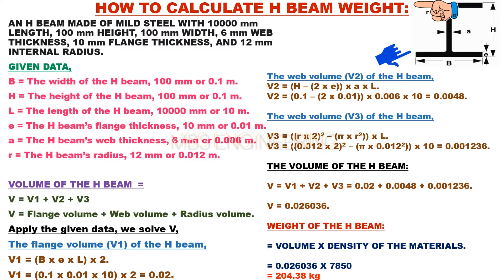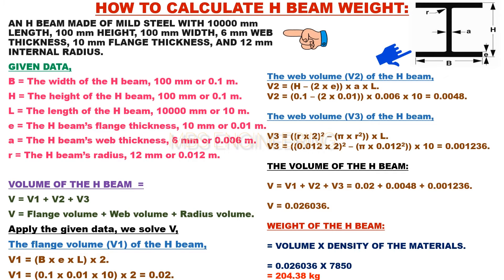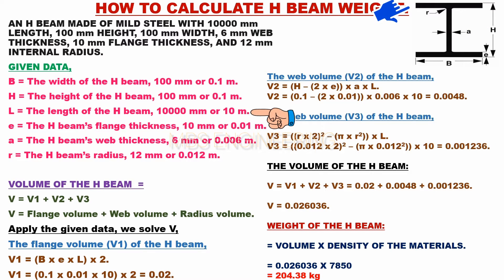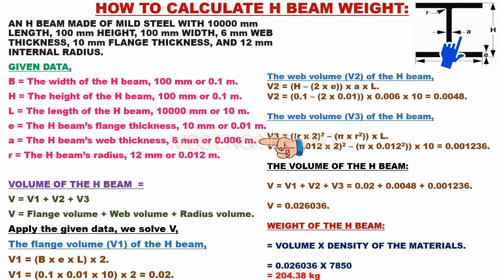We will now calculate the weight of a mild steel H-beam with the following dimensions: length 10,000 mm, height 100 mm, width 100 mm, web thickness 6 mm, flange thickness 10 mm, and internal radius 12 mm. The given data is: B = 100 mm (0.1 m), H = 100 mm (0.1 m), L = 10,000 mm (10 m), flange thickness A = 10 mm (0.01 m), web thickness A = 6 mm (0.006 m), and R = 12 mm (0.012 m).